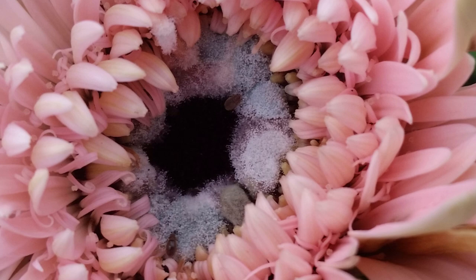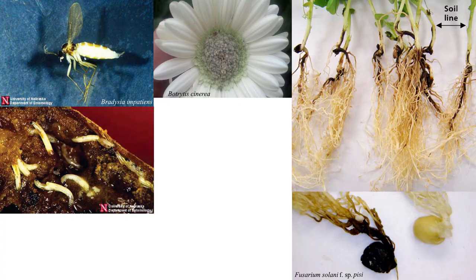Flower tissues are common points of infection and serve as holding spaces for the infection of fruit as well. Insects can also vector Botrytis, often through wounds or physical contact, such as in the case of the Bradesia genus of dark-winged fungus gnats.